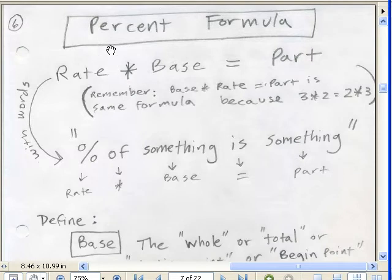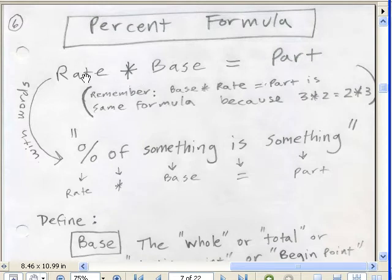In the book they use the word rate here, and I'm going to use the word rate throughout. Rate just means either the decimal or the percent. We could have rate times base or base times rate, because 3 times 2 is the same as 2 times 3.